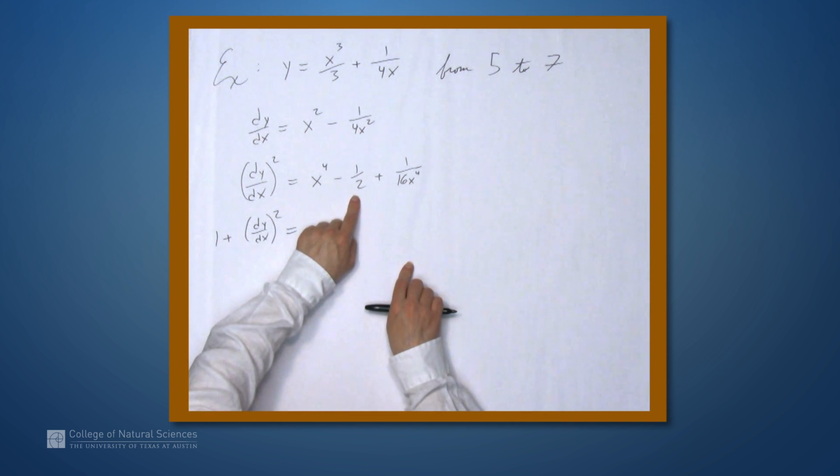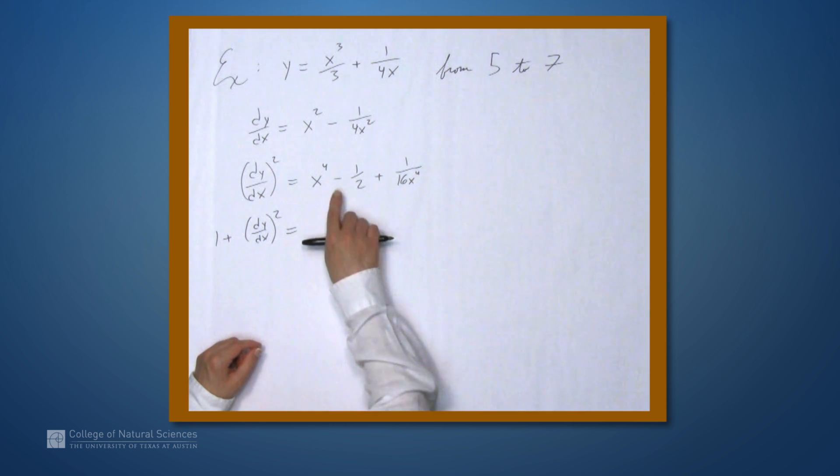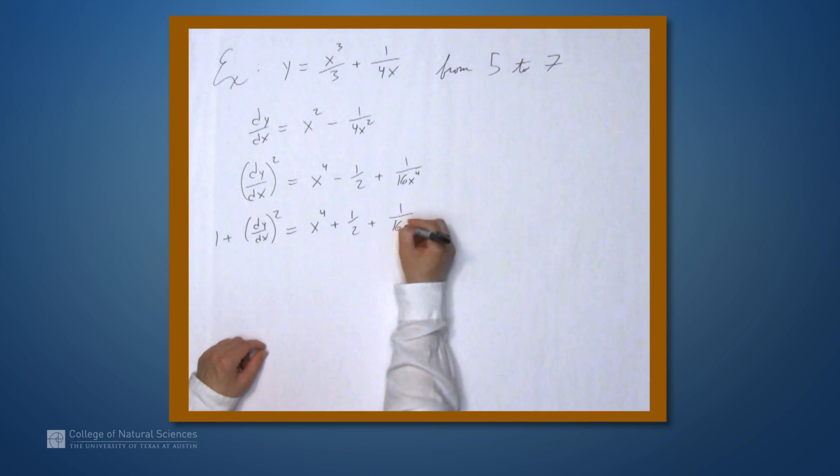Well, we have a constant term here. We're adding 1 to it. So this negative 1 half becomes positive 1 half. So this is x to the fourth plus 1 half plus 1 over 16x to the fourth.